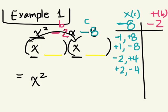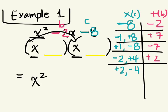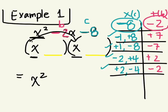We need to figure out which of these factors add up to negative 2. Negative 1 plus 8 is positive 7. 1 plus negative 8 is negative 7. Negative 2 plus 4 is positive 2. Positive 2 plus negative 4 is negative 2. Which one has a sum of negative 2? 2 and negative 4. Those are my factors. All we do now is write X plus 2 and X minus 4. That's factored form.